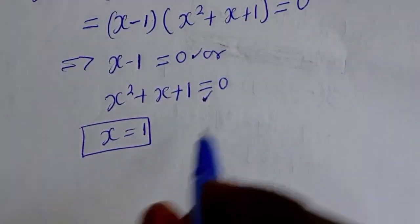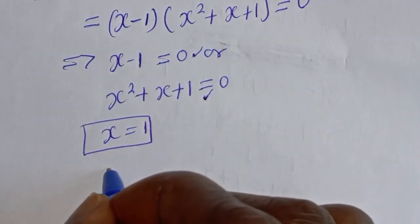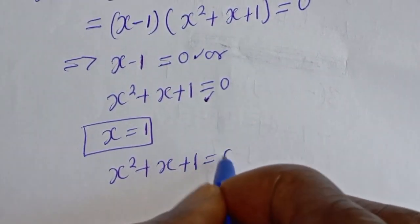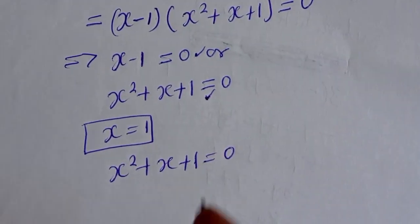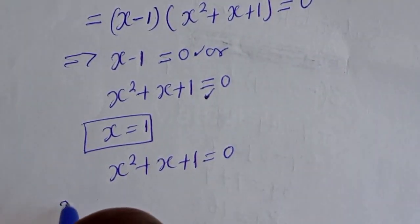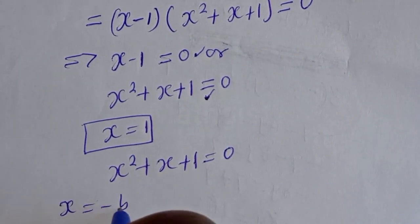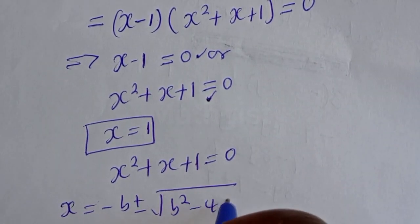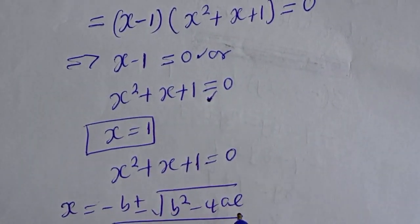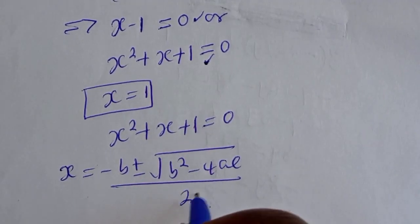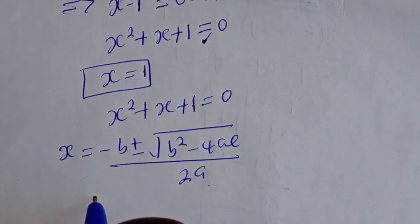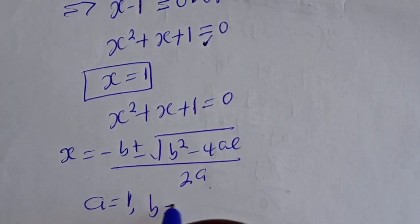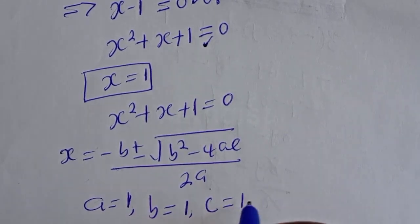From the second case, s² plus s plus 1 = 0 is a quadratic equation. Let's solve using the quadratic general formula: s equals minus b plus or minus square root of b squared minus 4ac, all over 2a. Here a is equal to 1, b is equal to 1, and c is equal to 1.